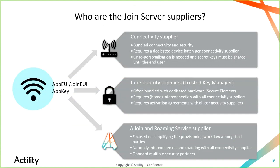You need activation agreements set up between their platforms — if they run a join server — and your network server. The third type of supplier deals more with network interconnection. Actility provides the Syncpark Exchange platform to interconnect different networks together, and using this interconnectivity, we want to enable the system to massively scale the number of devices that can roam or have global connectivity. Introducing a central activation service in this system will allow all devices to easily join the network from anywhere.